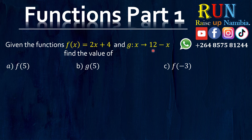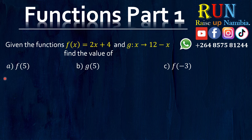So here we have two functions, and we are asked to find the value of A, B and C. I'm going to do A and give you a chance to do B and C. This is actually very, very easy. So for A, we have F and then inside the brackets we have a 5. So how do we solve this? Which function is having an F here? It's this function, which is F of X equals to 2X plus 4. So we are going to use this function.